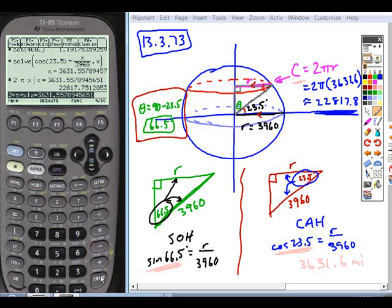Hey, problem 74 says what's the distance between two points that lie directly across from each other on this Tropic of Cancer?